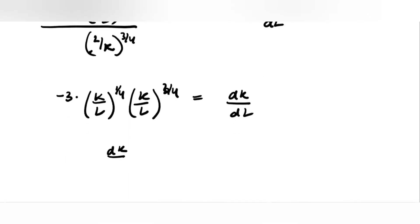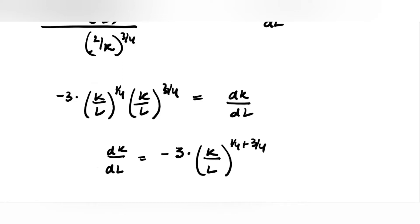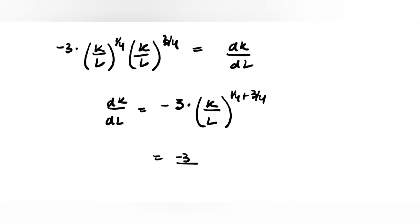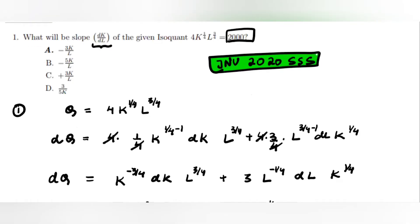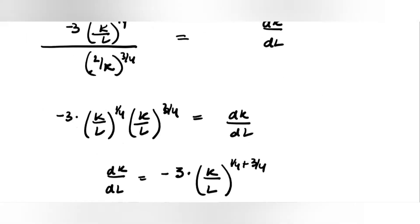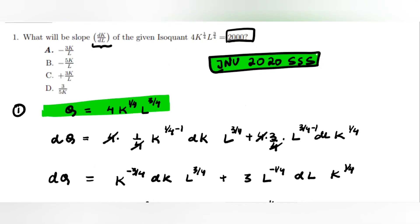So dk by dl will be minus 3 — bases are the same — (k/l) to the power 1 by 4 plus 3 by 4, which gives minus 3k by l. This is Method 1 to find the slope of the isoquant by total differentiating your production function and putting dq equal to 0. The answer is minus 3k by l.